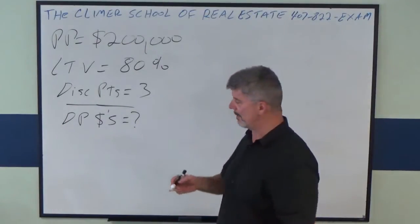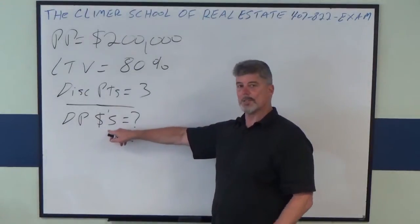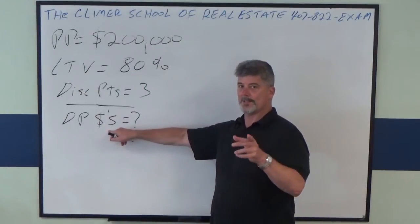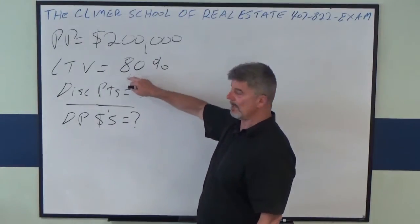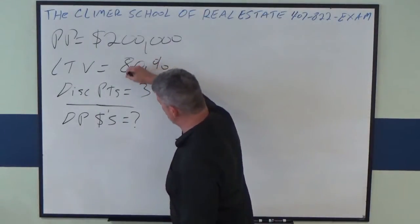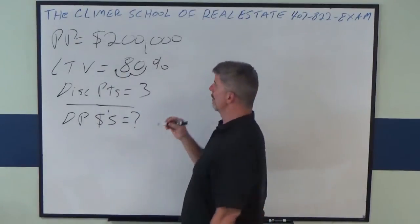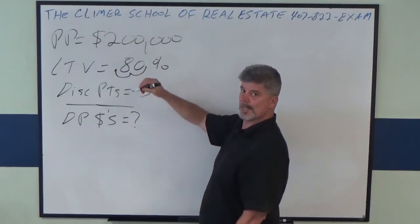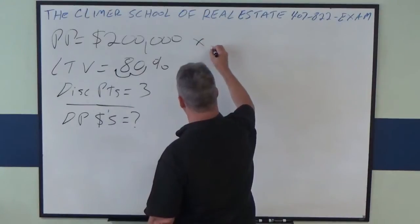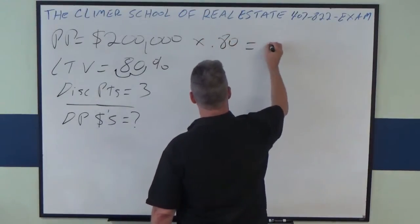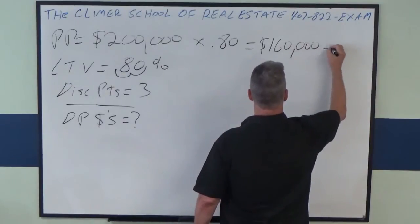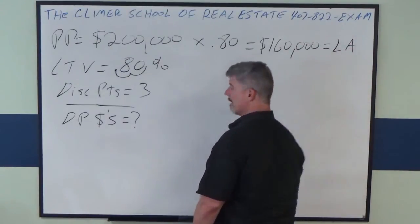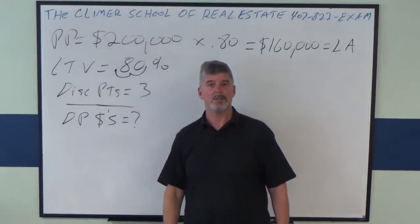Well, first we have to figure out how much the loan amount is because discount points are always on the loan amount, not the sales price, always the loan amount. So I'm going to take the LTV, turn this into a decimal by going to the left two spots. I'm going to multiply the purchase price times the decimal of 80%, which is 0.8. And that means the loan amount is $160,000.